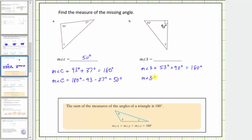Therefore, the measure of angle three must equal 180 degrees minus 53 degrees minus 90 degrees. 180 minus 53 minus 90 is equal to 37, and therefore the measure of angle three equals 37 degrees.